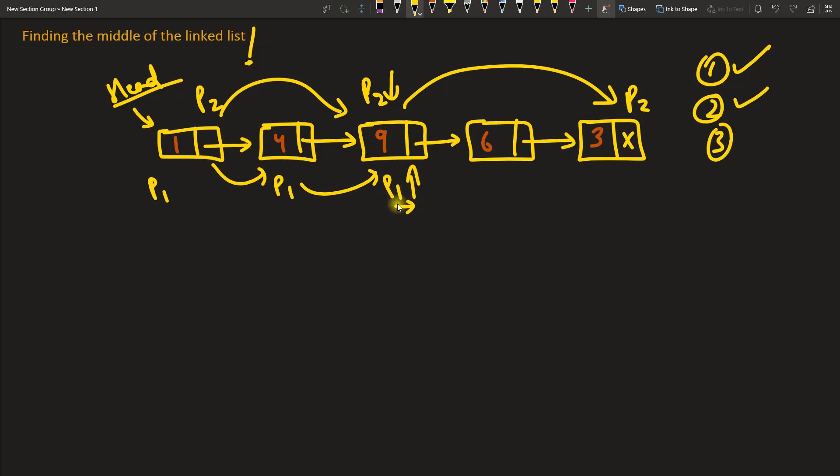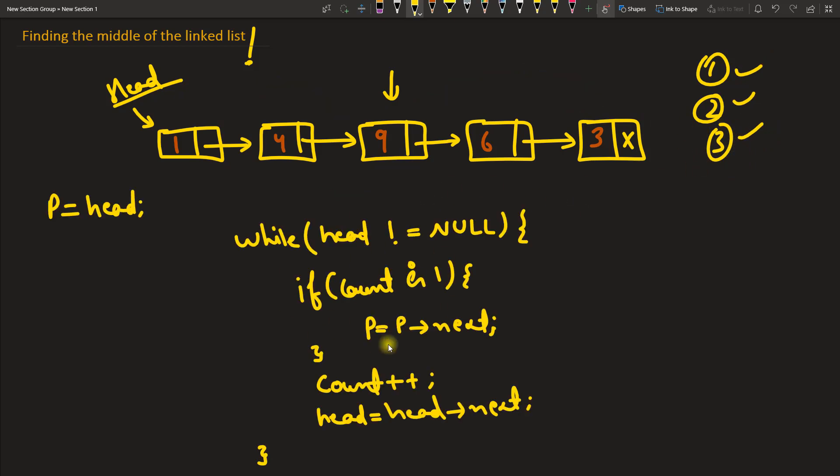p1 will show the center and we can just return this p1 from that function. So this is very cool. Many people would have guessed this also, but now this third one is cool. Very few people will actually get this. I have already done this while loop for you, so we will use two pointers, one is p and head.